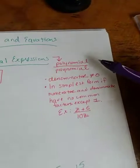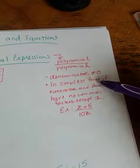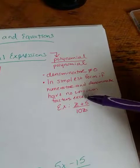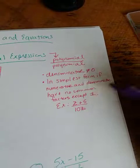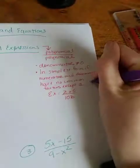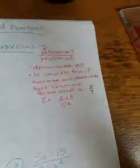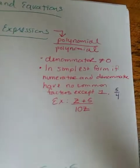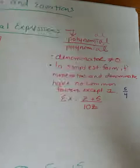A rational expression is in simplest form if the numerator and the denominator have no common factors except one. And that makes sense just for a regular rational number, like 5 fourths. That's a rational number and that is simplified because 5 and 4 don't have anything in common except one.